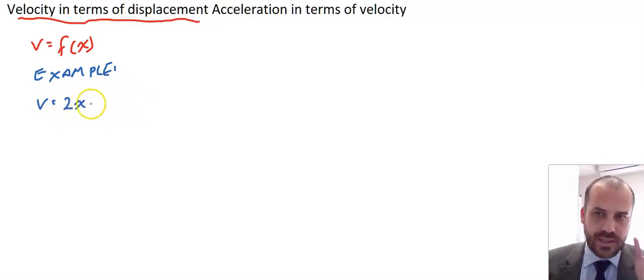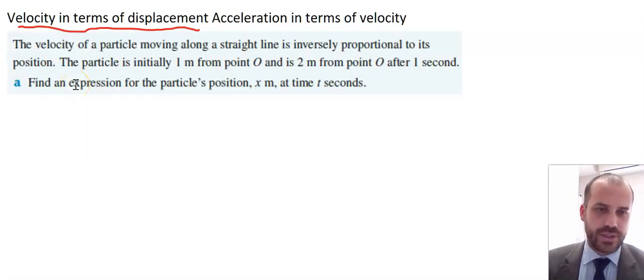So what this says is that if you sub in a position of a particle, or if you know the position of the particle, you can determine the velocity just by putting it directly into our function. Let's dive into a real example so you can see what it looks like.